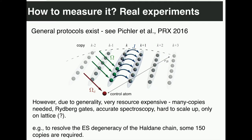There is a proposal by Hannes Pichler and collaborators in 2016 where, basically, they exploit the fact that if you have many copies of the same system and you are able to entangle them via additional control degrees of freedom — in particular, control atoms — it is in principle possible to extract entanglement spectra, or at least a few eigenvalues of the entanglement spectrum, for arbitrarily difficult density matrices. However, this scheme is very general and requires a lot of resources — it's extremely expensive. For a chain of just 10 sites, they need something like 50 copies and very long experimental runs.